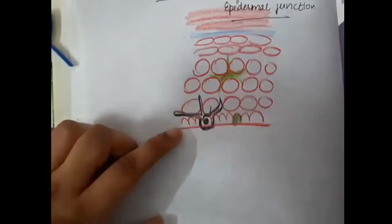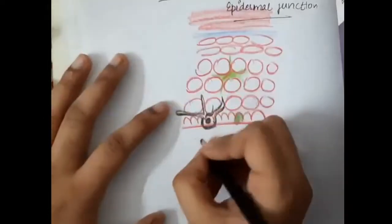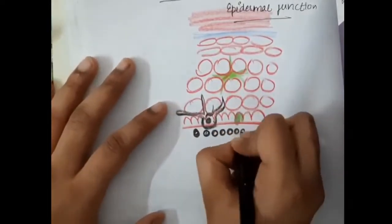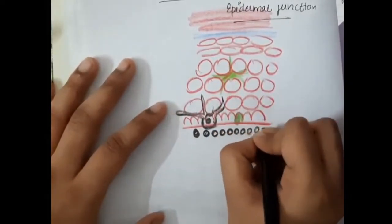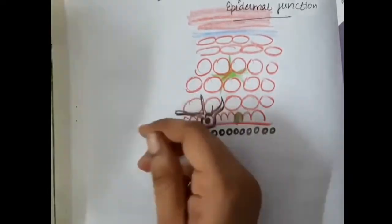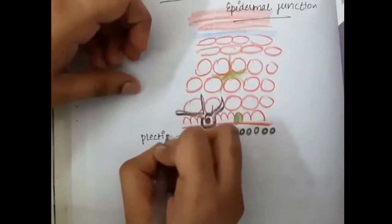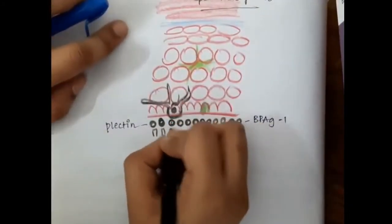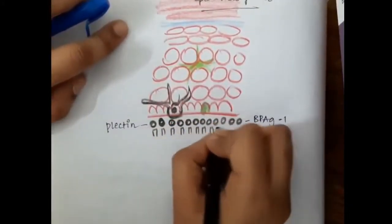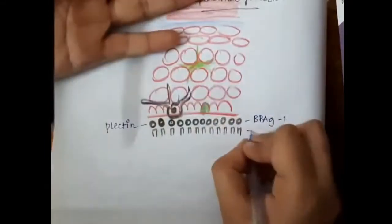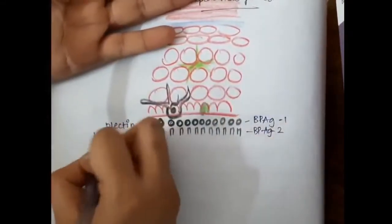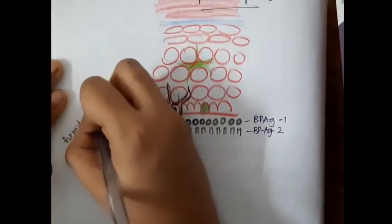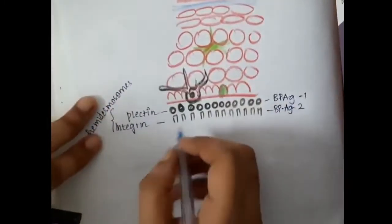In the basement membrane zone, we have different layers. Just below the stratum basale we have the layer of hemidesmosomes, which contains two types: one we have the plectins and second we have the integrins. Plectins are BPAG1, and below that we have the next layer which are integrins constituting BPAG2. Both plectins and integrins are hemidesmosomes.